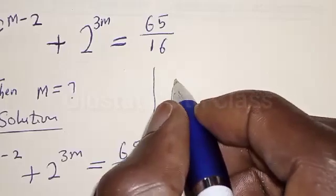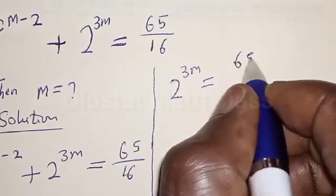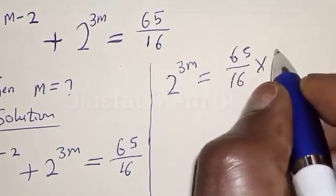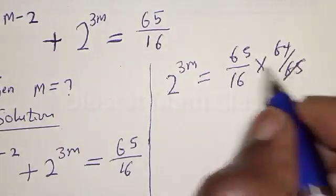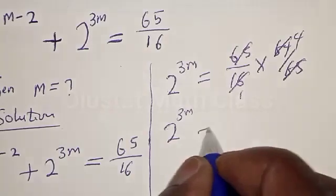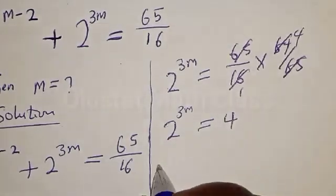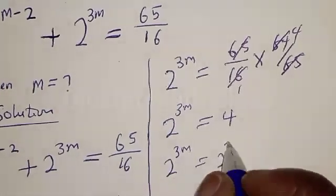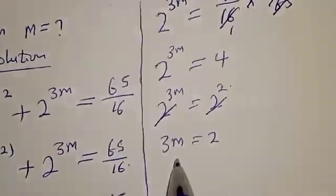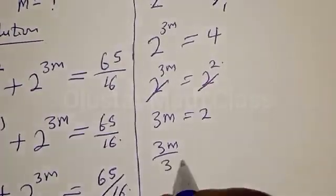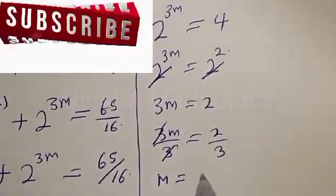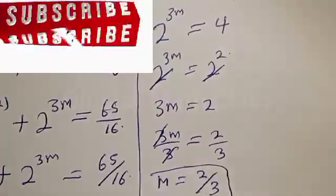This can be rewritten as 2 raised to power 3m is equal to 65 divided by 16 times 64 over 65. Now 65 cancels with 65, and 64 divided by 16 gives 4. Therefore we have 2 raised to power 3m is equal to 4, which is 2 squared. Since they have the same base, 3m is equal to 2. Therefore m is equal to 2 divided by 3. That is our answer.